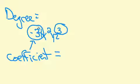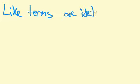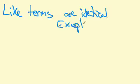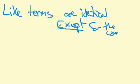Monomials that aren't exactly the same, except for this coefficient, are called like terms. Let me just give you some more examples of like terms. Like terms are identical, except for the coefficient.